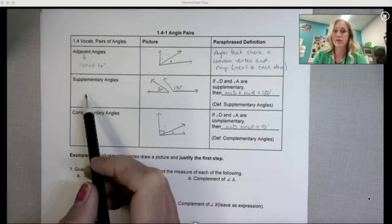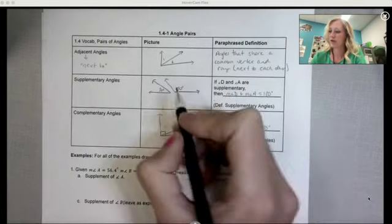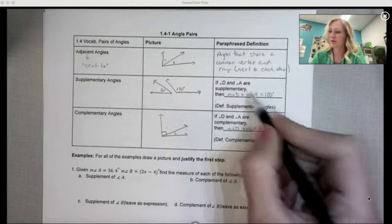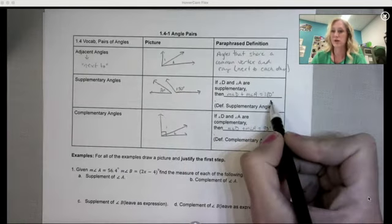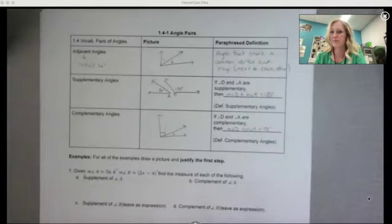Supplementary angles mean that they add to 180 degrees together. So if we're told angle A and angle D are supplementary, we know their measurements add to 180 degrees. So maybe I'll label this A and D so we can use that.